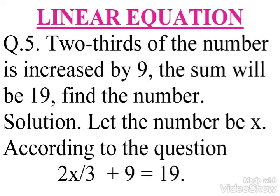The number is multiplied by 2 upon 3, that is the two thirds of the number, so 2x by 3, and it is increased by 9, so plus 9 equals 19 because the sum will be 19. The equation is 2x upon 3 plus 9 equals 19, or 2 upon 3 x plus 9 equals 19.